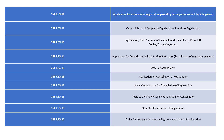GST REG-15 is the order of amendment of registration. GST REG-16 is the application for cancellation of registration — used when someone stops their business, closes their online business, or their turnover falls below the threshold of 20 lakh, and they want to cancel their GST number.